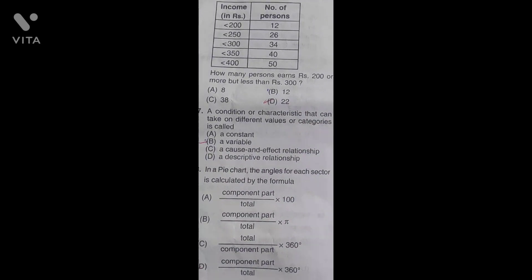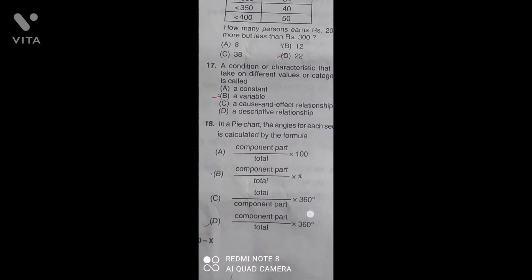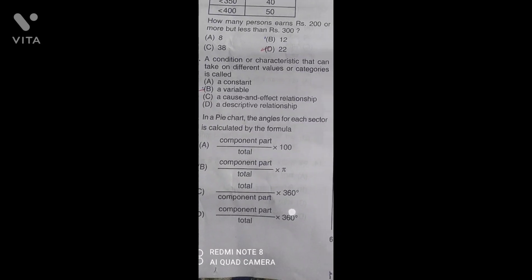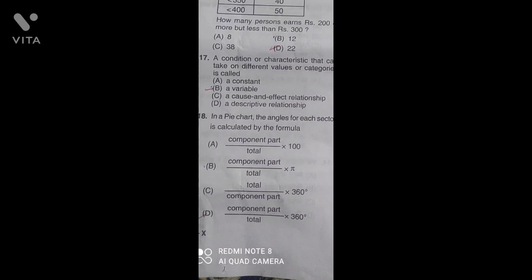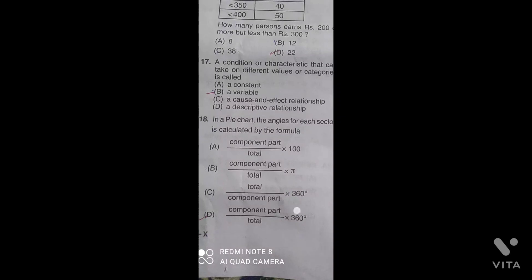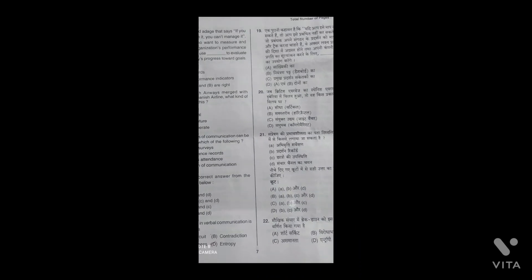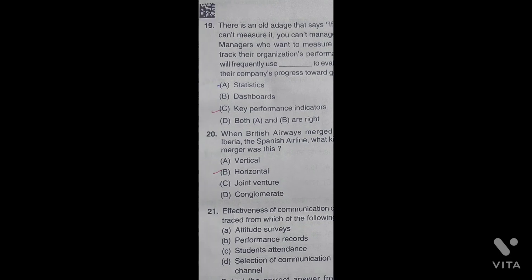A condition or characteristic that can take on different values or categories is called a variable. In a pie chart, the angles for each sector is calculated by the formula: component part divided by total into 360 degrees. The answer is D.